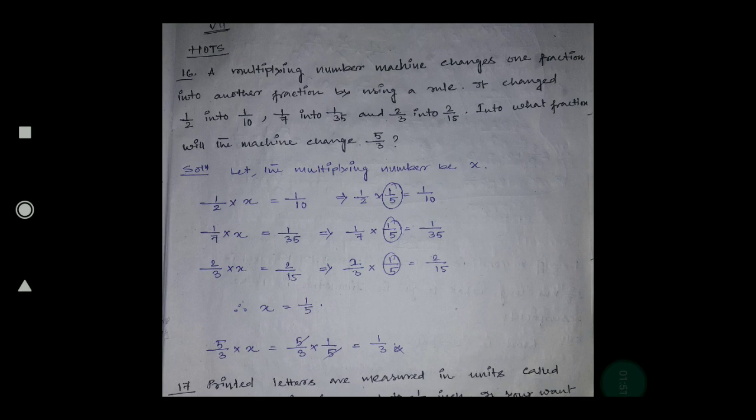Suppose you put 1/2 as input, the machine gives 1/10 as output. If you put 1/7, it gives 1/35. If you put 2/3, it gives 2/15. So what is the machine's rule? That is what you have to find by yourself.